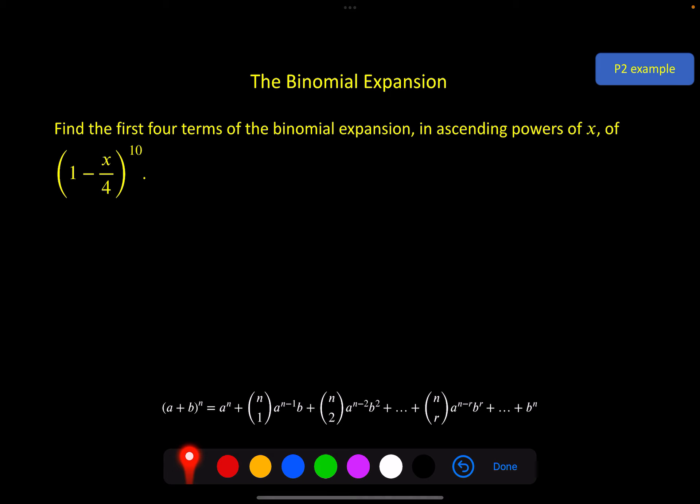So we'll do an example of this. This is a good question in an exam because they can build it up. They can get you to do the expansion, like we're going to do here, and then go on to use the expansion, which we're going to do on the next slide. So first of all, we need to do the expansion. So we want the first four terms in ascending powers of x. So that means I'm going to want my a to be the 1, my b will be -x/4, n of course is 10, and I'll start at the first one and just go until I've got 4.